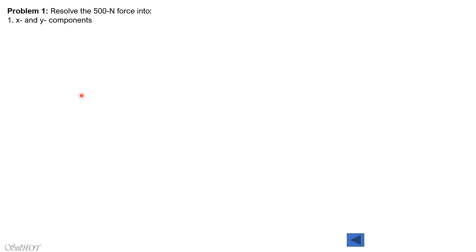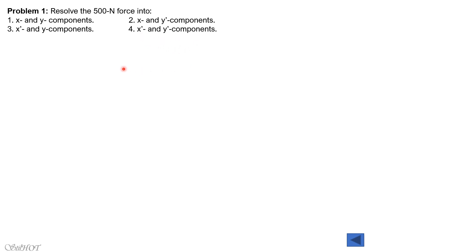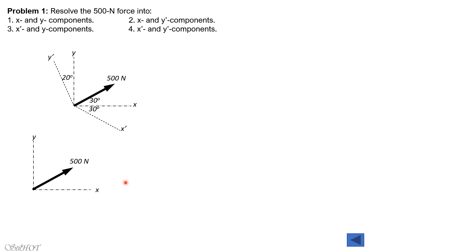Let's look at the solution to problem 1. We resolve the 500 newton force into x and y components, and also into x prime and y prime components. The principle is the parallelogram law. The 500 newton force has inclination angles such that it meets the y-axis at 60 degrees (90 minus 30). The parallelogram reduces to a rectangle, and from the tip of the force we draw lines parallel to the x and y-axis to form that rectangle.